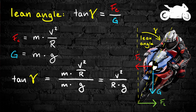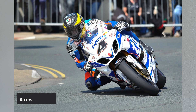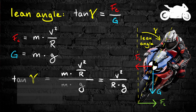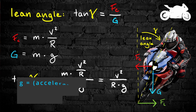Here's the formula for the lean angle. When we substitute in the formulas for the centrifugal force and the weight force Qi, we see that the lean angle depends only on the corner radius and the speed, when we take the acceleration due to gravity as constant.